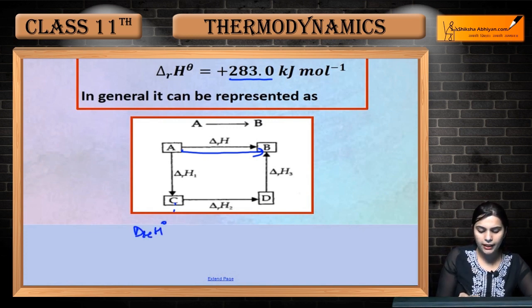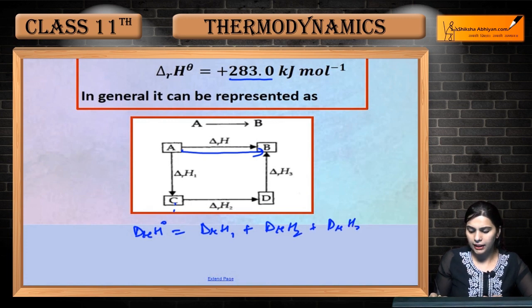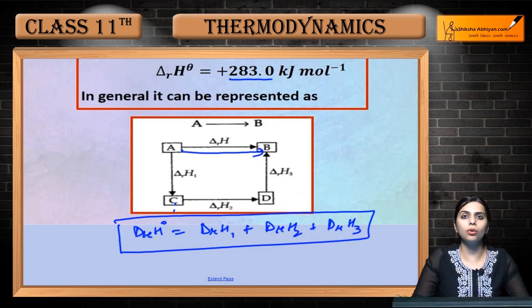So what will the enthalpy of reaction be? Delta R H1 plus delta R H2 plus delta R H3. This will be the total enthalpy, which you call Hess's law.